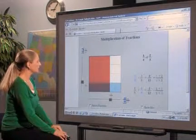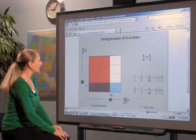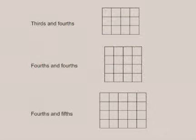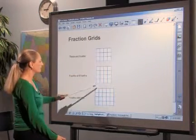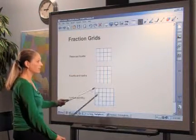A similar model can be constructed with paper and crayons. Grids of different dimensions can be used to model multiplication with fractions of different denominators: thirds and fourths, fourths and fourths, fourths and fifths, and so on.